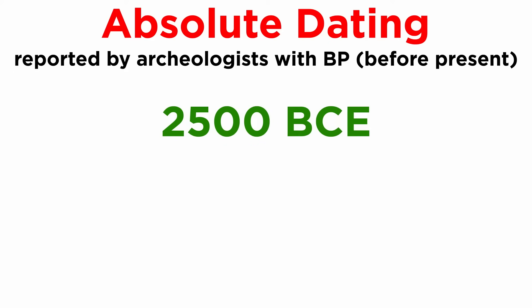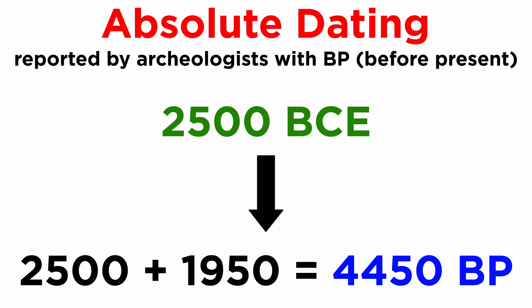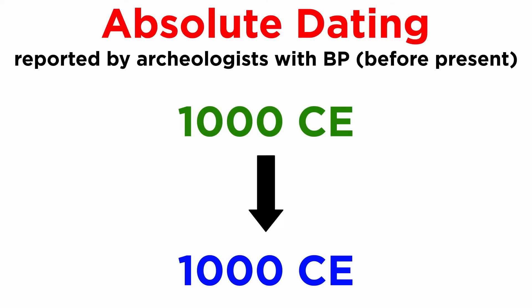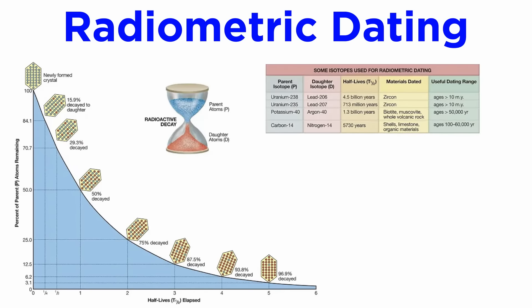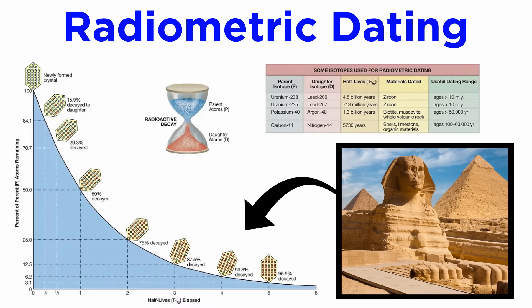The year 2500 BCE would therefore be 4450 BP. However, if the dates are in the Common Era, or CE, these dates will often be used. We covered some methods of absolute dating in the geology series, but let's look at the ones that are specific to archaeology. Radiometric dating is one of the most commonly used absolute dating methods in geology, and it is also very helpful in dating archaeological sites. However, there are some major problems that many radiometric dating methods have when dating archaeological remains.